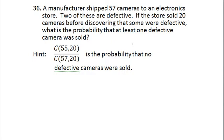A manufacturer shipped 57 cameras to an electronics store. Two of these are defective. If the store sold 20 cameras before discovering that some are defective, what is the probability that at least one defective camera was sold?